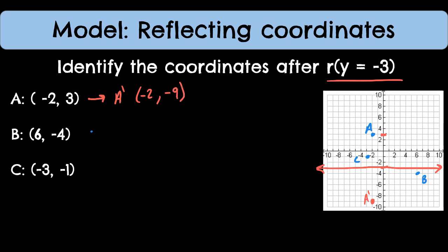Likewise with b, I'll write b prime. If it is reflected, well, it's 1 away currently, and it'll then still be 1 away. So b prime would be right here at 6 comma negative 2.